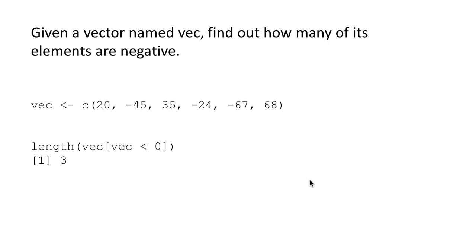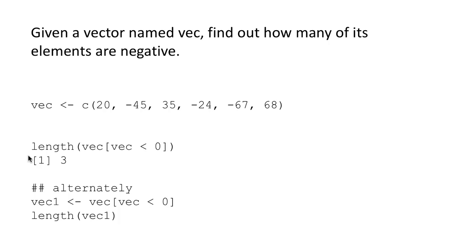This is very straightforward and we could also do it in multiple steps. We could say vec1 is vec[vec < 0], so vec1 is a vector containing only the negative elements, and then we say length(vec1). Initially I would suggest taking this easier step-by-step approach. There is no problem if you solve it the easy way. Nobody says you have to solve it in one line of code. Clarity is most important — as long as you correctly do something, that is more important than writing it succinctly.